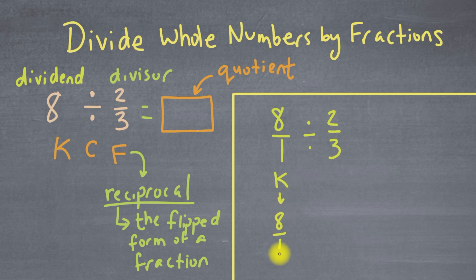We've got 8 over 1. Now I've got to change this division sign into a multiplication operation. And then I'm going to put an F here for flip. So I'll take this 2 over 3, and I'm going to flip it so that it's 3 over 2. Don't worry about the fact that it's improper, that doesn't matter.